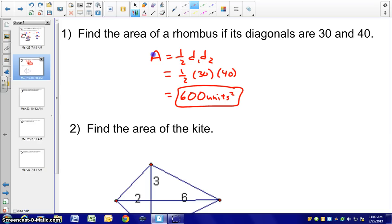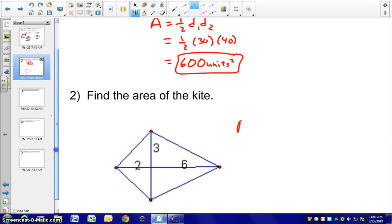Taking a look at our second example, we want to find the area of the kite. And again, on the kite, it's one half D1 D2. We definitely know we have the longer diagonal here, two and six, so that's eight. We got to think back to our properties here of a kite. We do know that one diagonal bisects another one, and that is the three there. So our second diagonal would be six, which would give us 24 units squared.